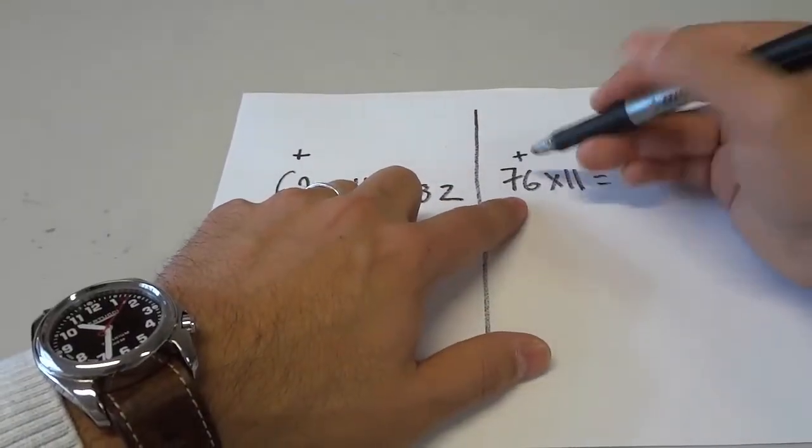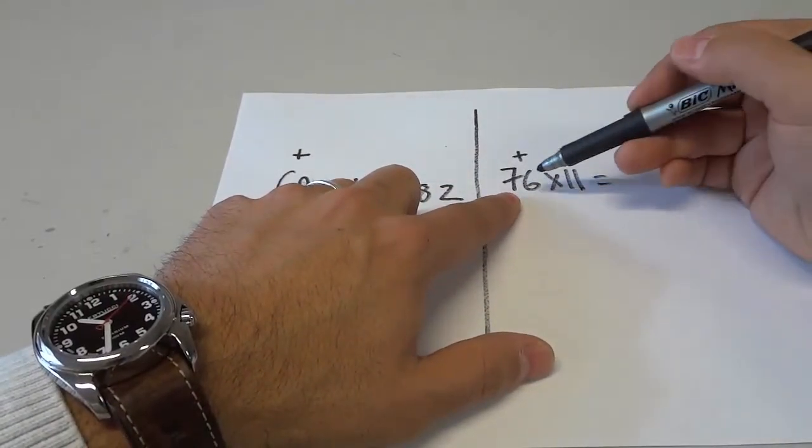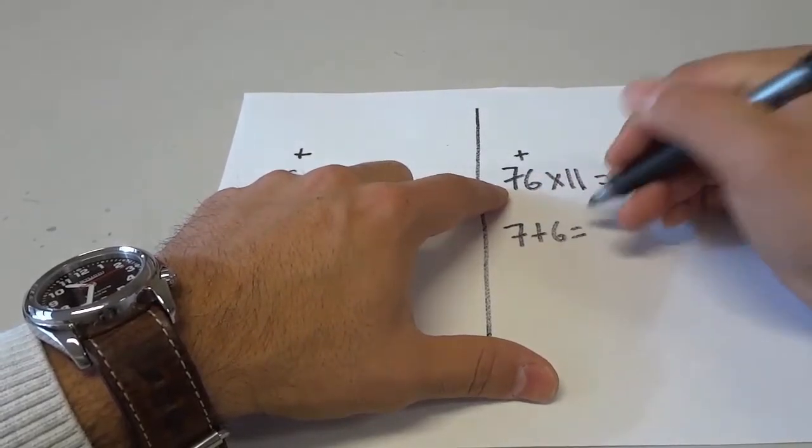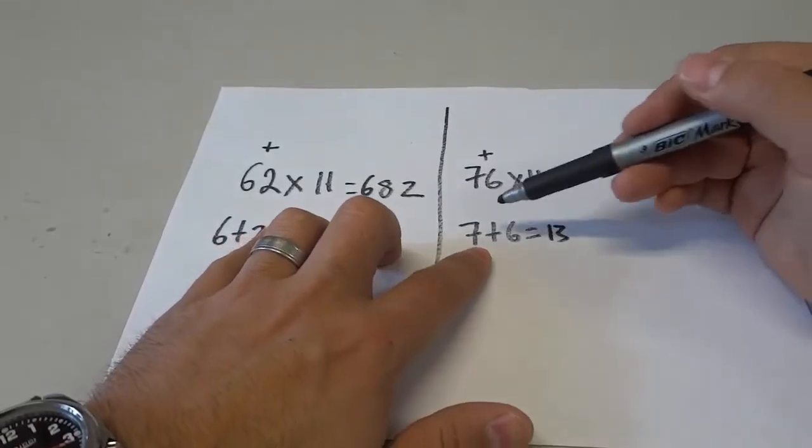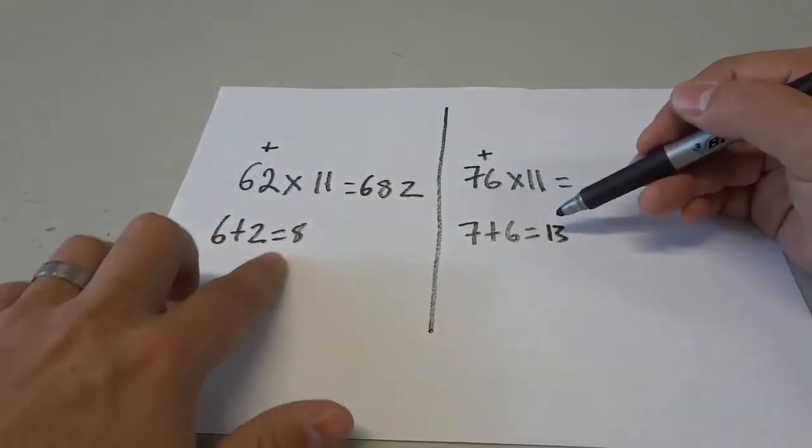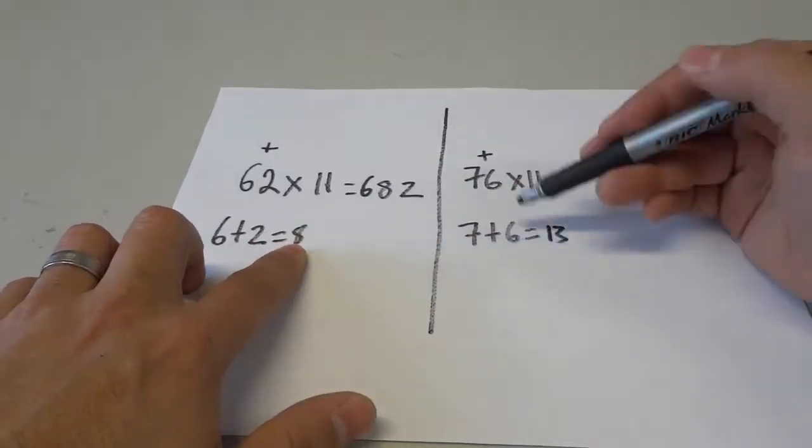So we have to add these non-11 numbers together. We have to add 7 plus 6. 7 plus 6 is equal to 13. And if we do 7 plus 6 is equal to 13, you see that this answer has two digits. Not like this one. This one only has one. This one has two.